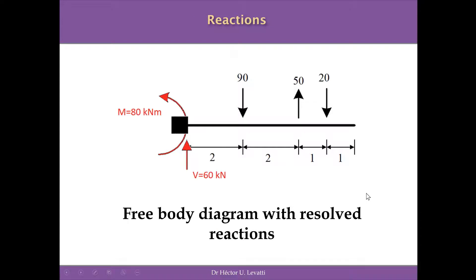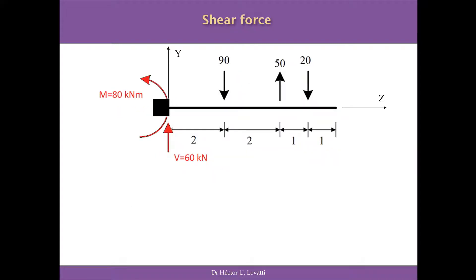Now we can sketch the free-body diagram with the resolved reactions. H is equal to zero, so we delete it. We have a reactive moment of 80 kN·m in the anti-clockwise direction and a vertical reaction going up equal to 60 kN. The next step is the determination of the shear forces in every cross-section. We are going to sketch the shear force diagram using a coordinate system with origin at point A.